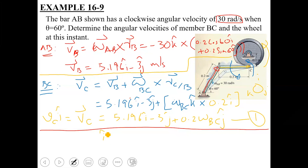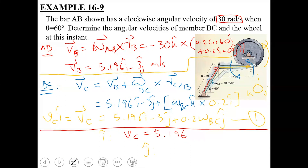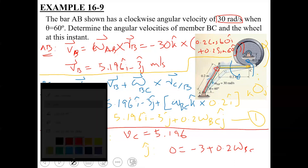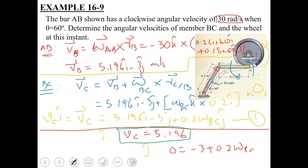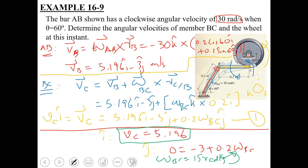Substituting V_C equals V_C i into the equation and comparing i and j coefficients: from the i-coefficients, V_C equals 5.196; from the j-coefficients, 0 equals minus 3 plus 0.2 omega_BC, giving omega_BC equals 15 radians per second. Since this is a positive value, the assumed counterclockwise direction for omega_BC is confirmed correct.